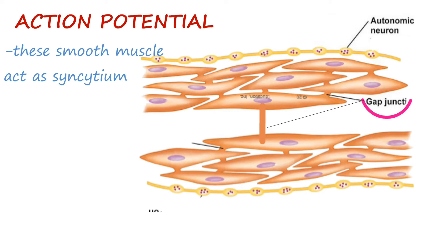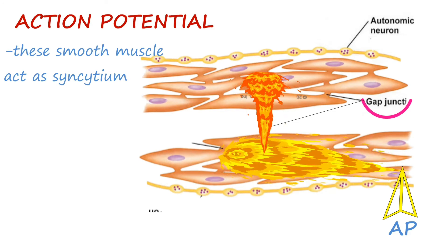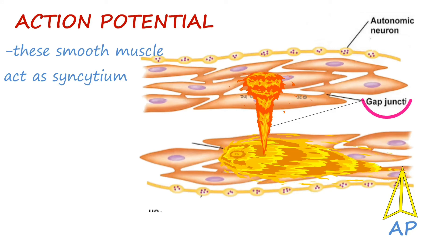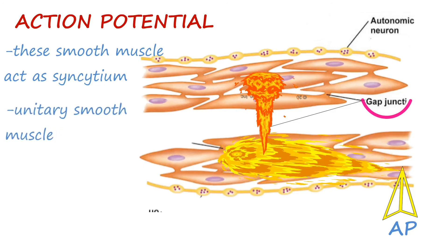So what happens is an action potential elicited anywhere within the muscle mass travels in all directions in the muscle. The distance traveled depends on excitability of the muscle, and this type of smooth muscle is known as unitary smooth muscle.